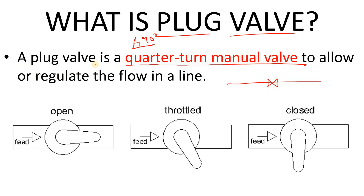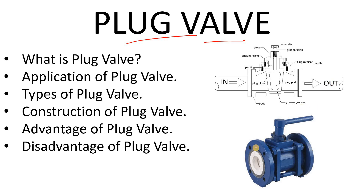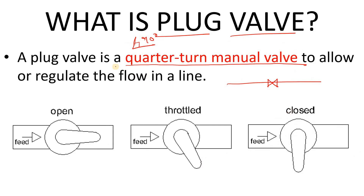A plug valve is a quarter-turn manual valve. If there is a pipe and the valve is in the open condition, you simply turn it 90 degrees and it will be closed. That's why the plug valve is a quarter-turn manual valve which allows or regulates flow in a line. The name 'plug' comes from the shape — just like an electrical plug switch at home, whose shape gives it the name 'plug valve.'